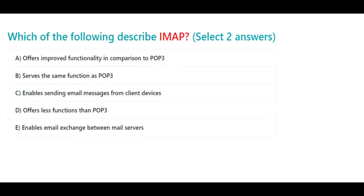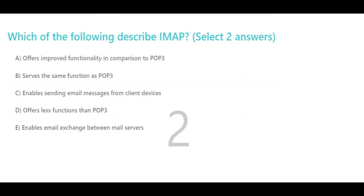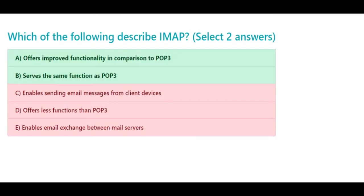Which of the following describe IMAP? Select two answers: a. Offers improved functionality in comparison to POP3, b. Serves the same function as POP3, c. Enables sending email messages from client devices, d. Offers less functions than POP3, e. Enables email exchange between mail servers. The correct answers are a. Offers improved functionality in comparison to POP3 and b. Serves the same function as POP3.